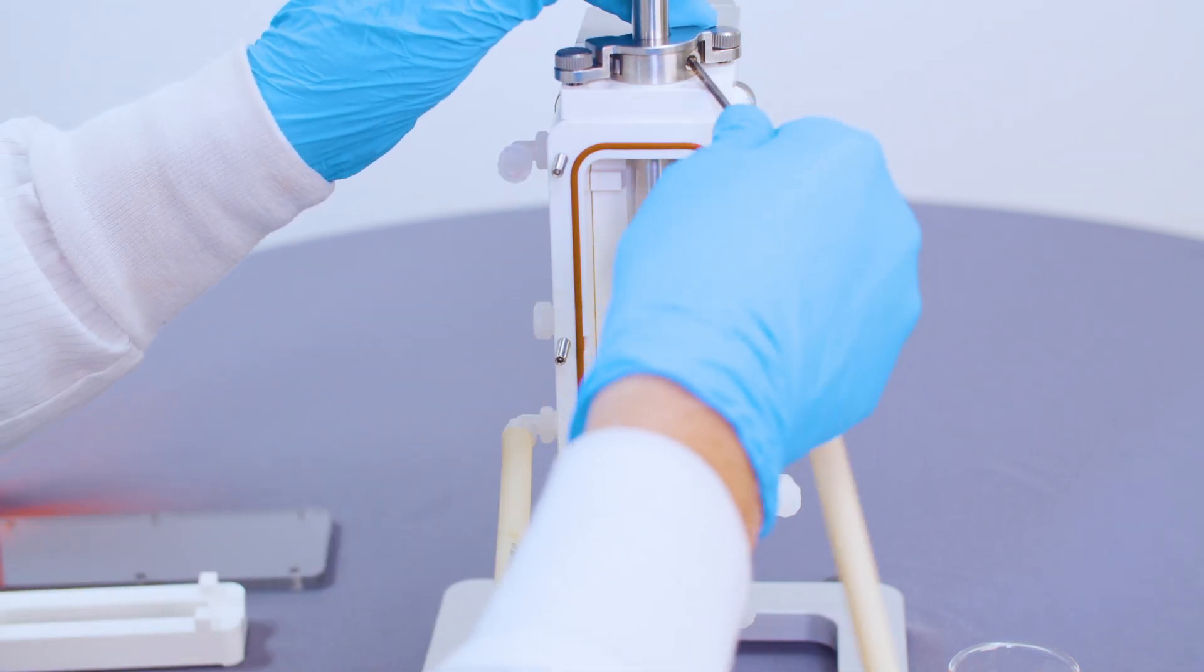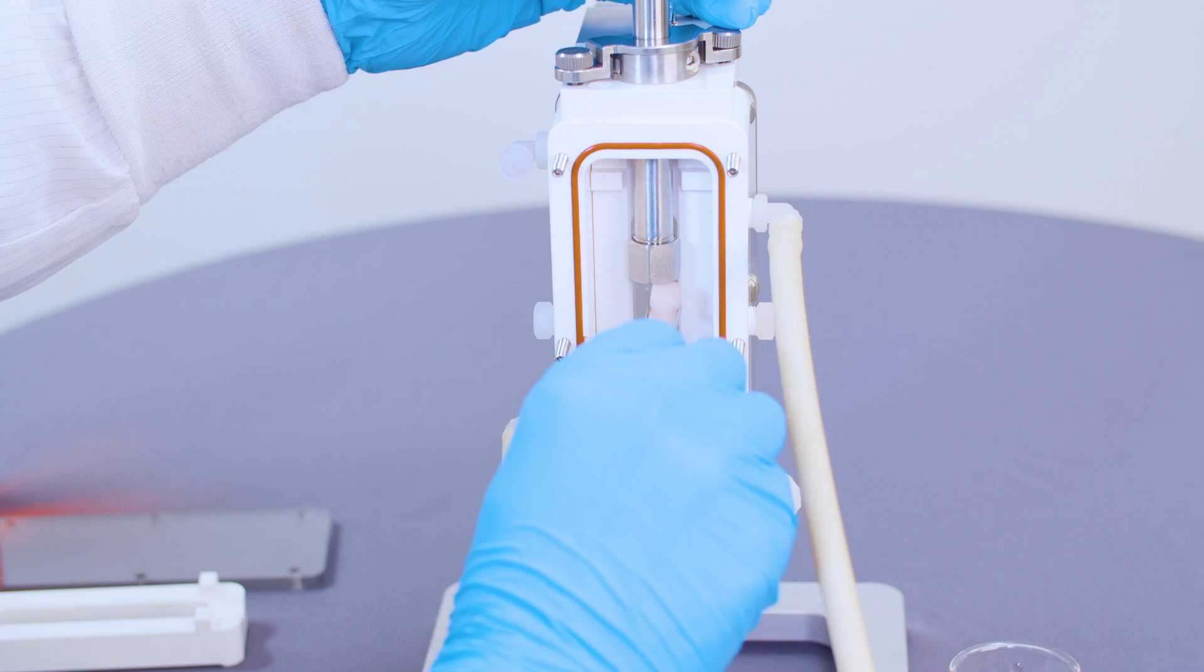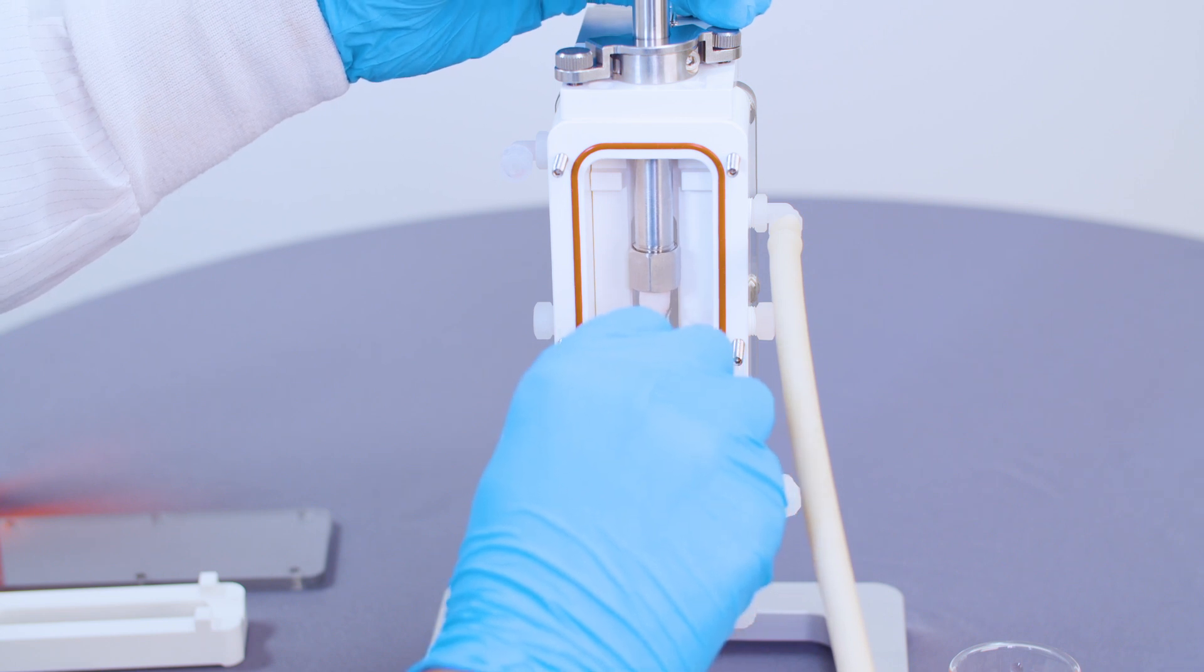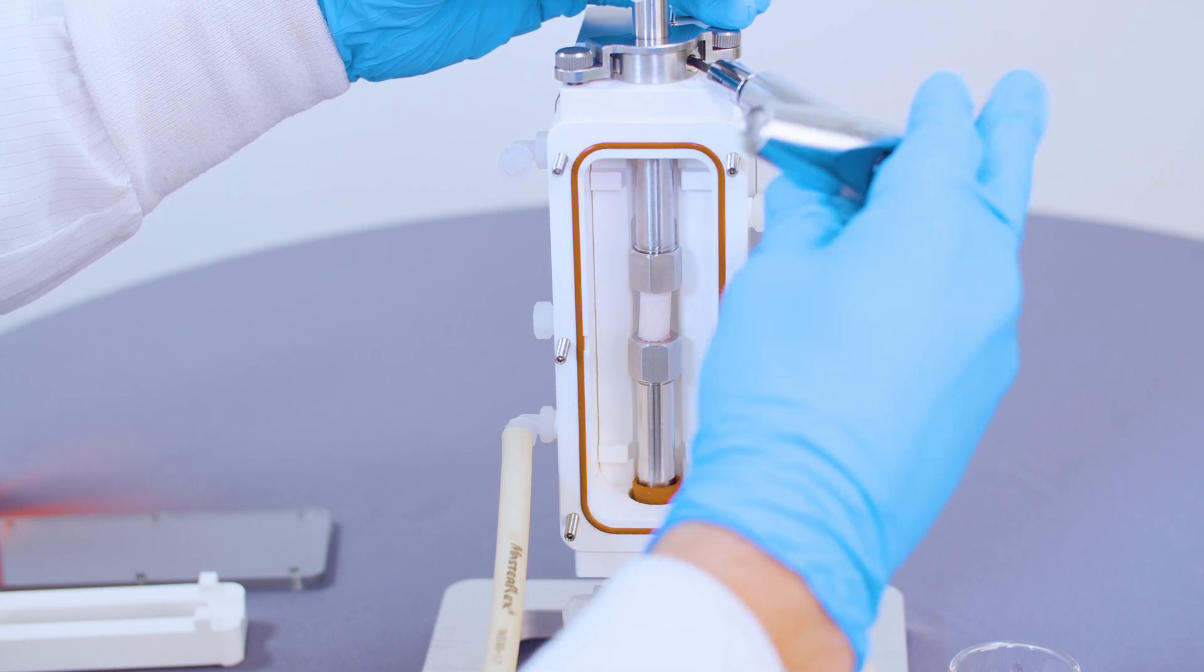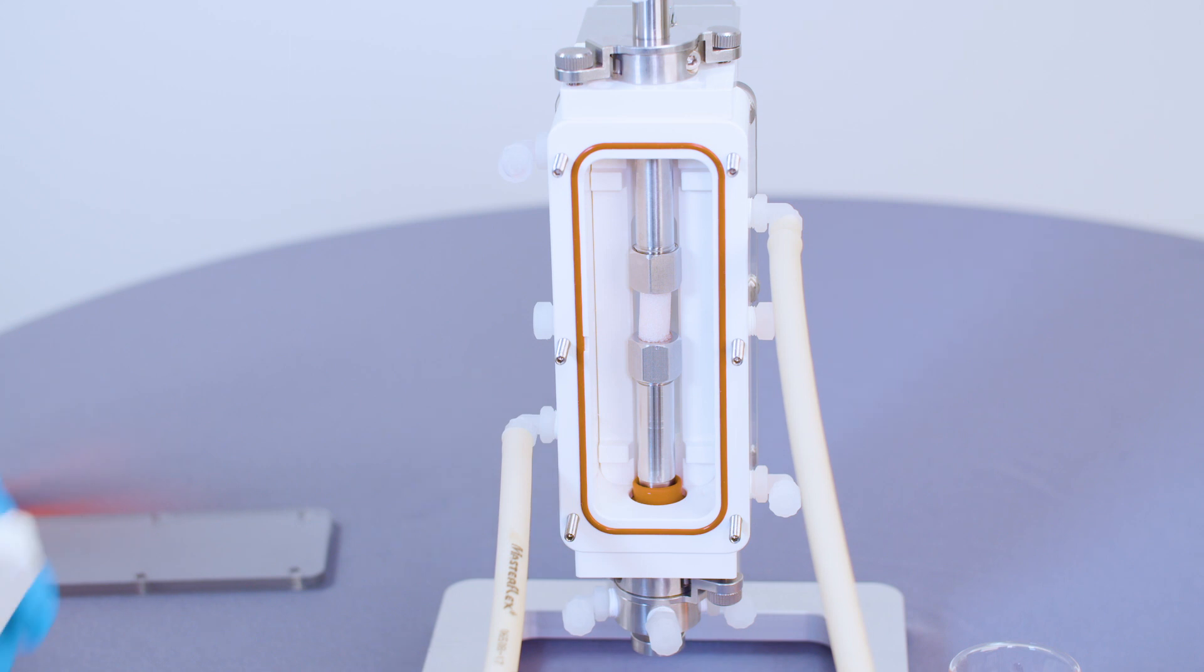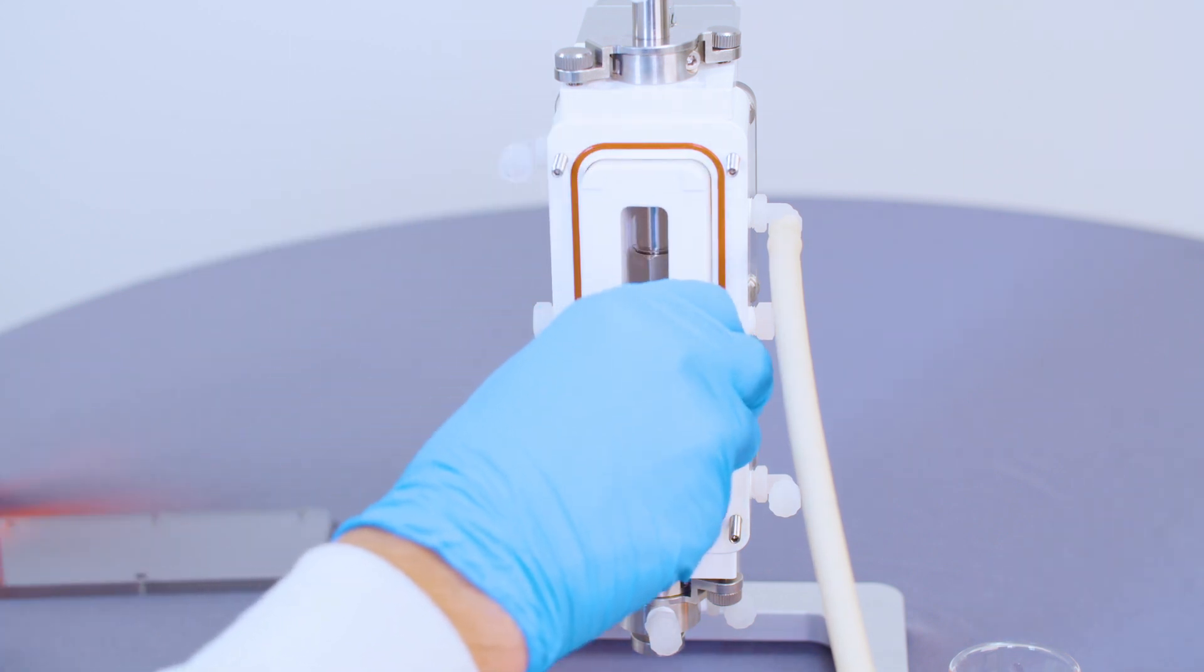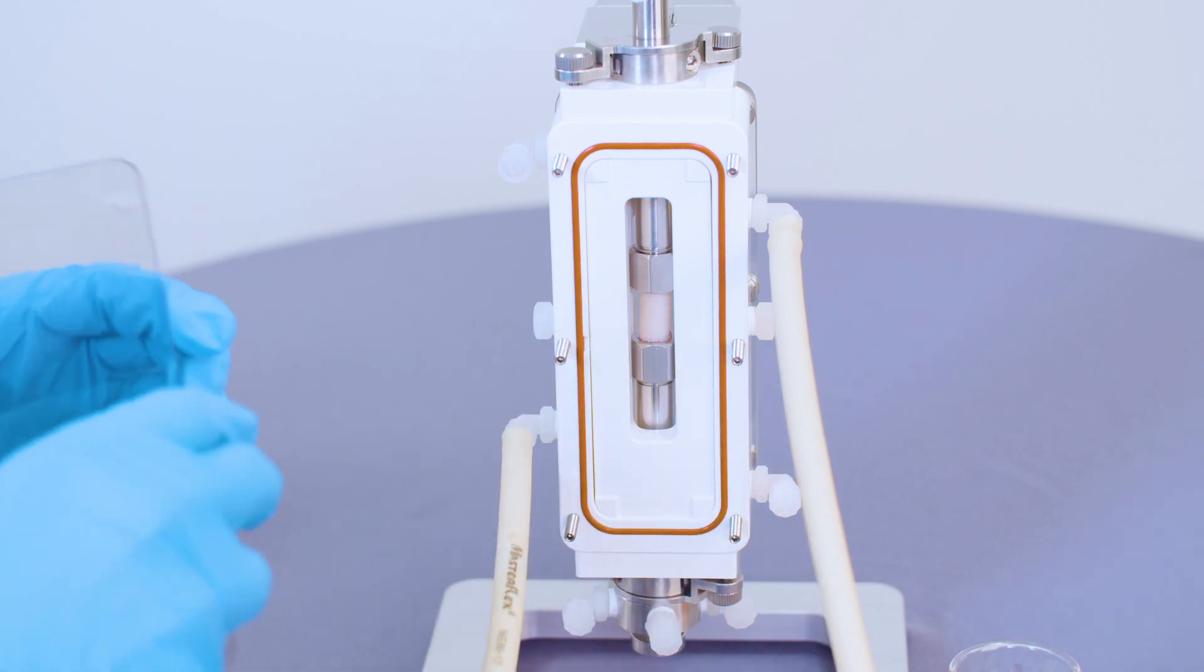To mount the sample, we will loosen the top shaft collar and adjust its initial height to yield enough space for your sample. Once the sample is positioned in between the upper and lower fixtures, you can tighten the upper shaft collar with a torque wrench. Insert the front volume reducer block and secure the front door with the thumb screws.